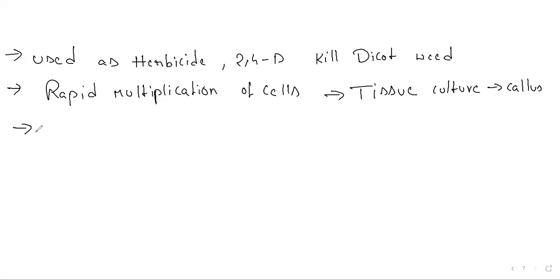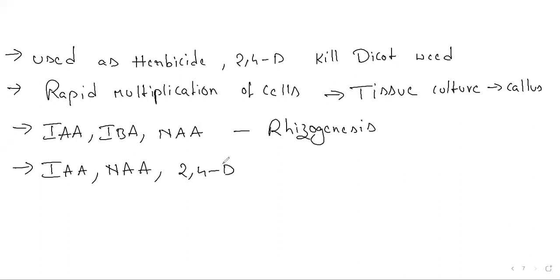Application of IAA, IBA, NAA (Indole-3-acetic acid, Indole butyric acid, naphthalene acetic acid) on stem promotes root formation, which we call rhizogenesis. A spray of dilute IAA, NAA, and 2,4-D prevents premature withering of flowers and fruits in citrus plants and apple.